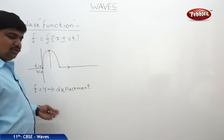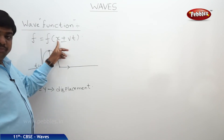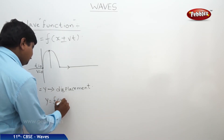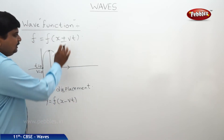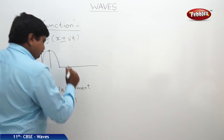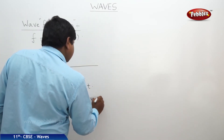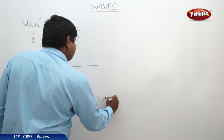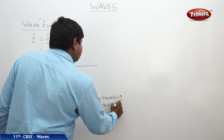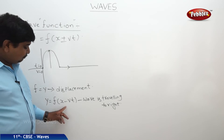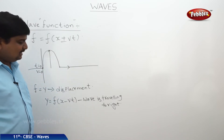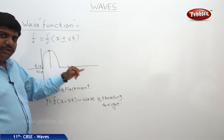We are expressing the displacement of the sound wave as a function of position, velocity, and time. Here, there is a plus or minus coordinate, but for a wave travelling to the right, we write minus. The reason is that when a wave is travelling towards the right, its amplitude continuously decreases because the wave always travels from the high range to the low range.